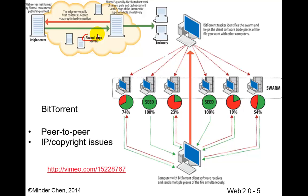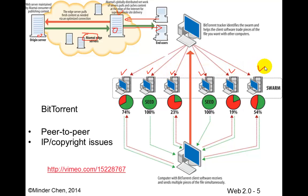Before BitTorrent, we had services such as Akamai, which set up edge servers. The edge server can cache the original server's data and is closer to some of the users. So if a user requests certain data and the edge server has it already cached, it can return it to the end user to improve performance. BitTorrent uses a different approach — a peer-to-peer approach — which uses individual users' computers as servers to share data, information, and video with other users.